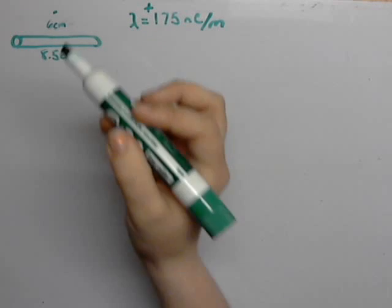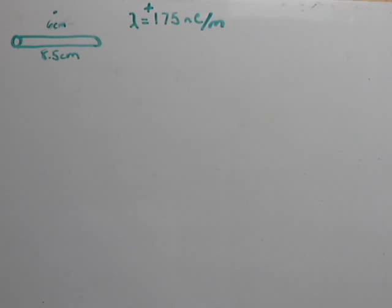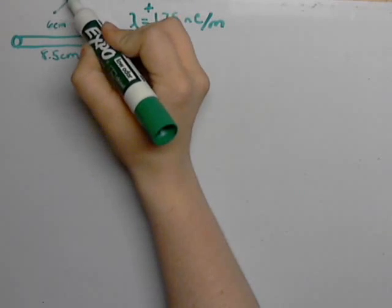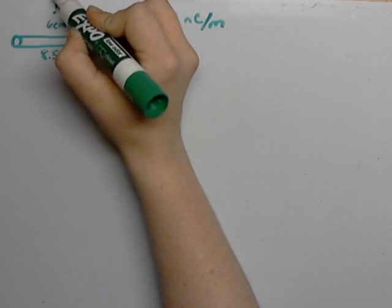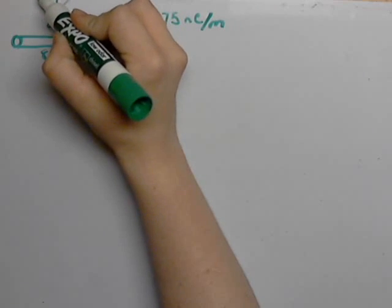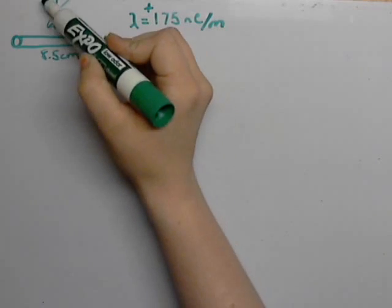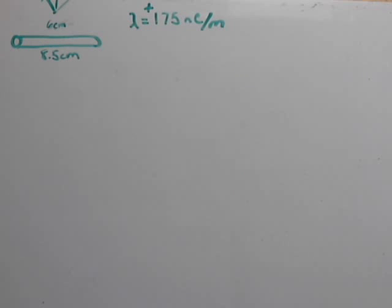Alright, so we have this point 6 centimeters above its midpoint. This is a positive charge as we can see, so we're going to have all of these electric fields coming from all the points on the wire coming out in this direction away from the wire.